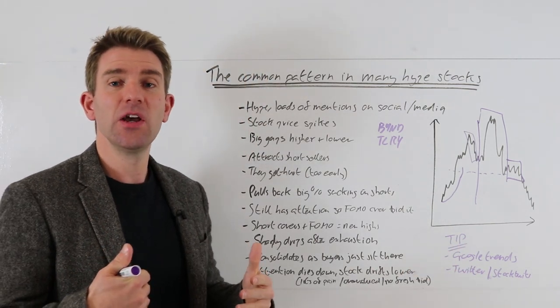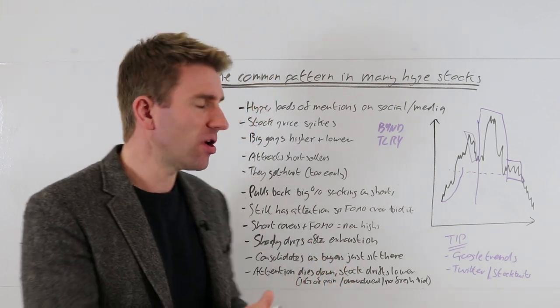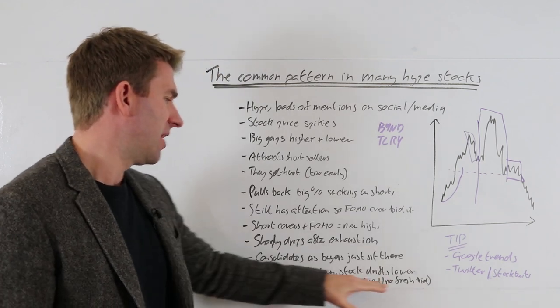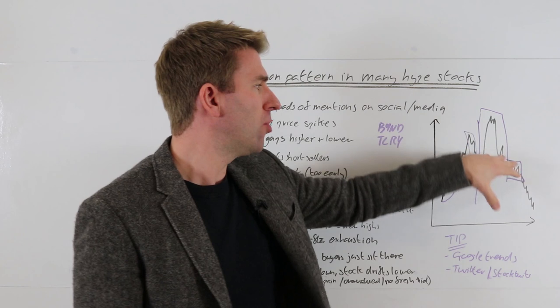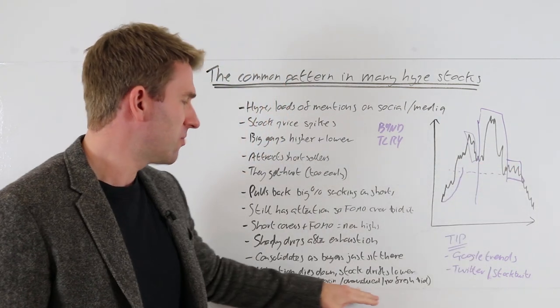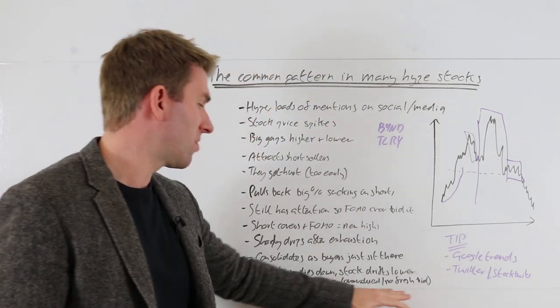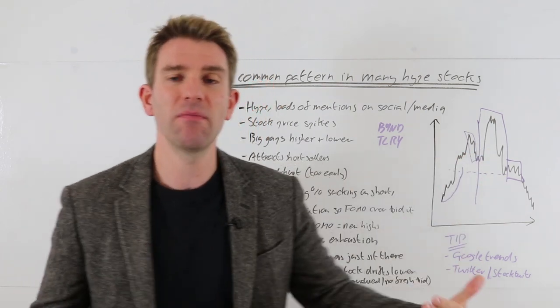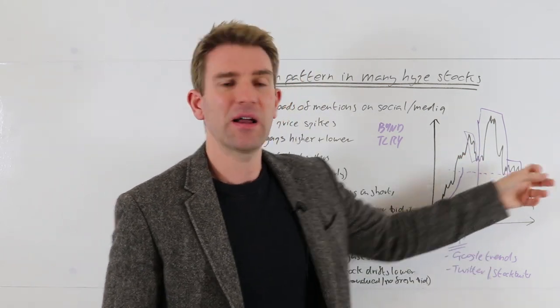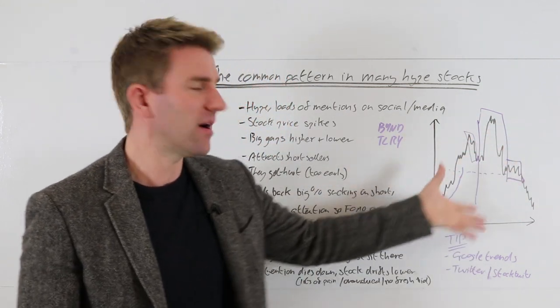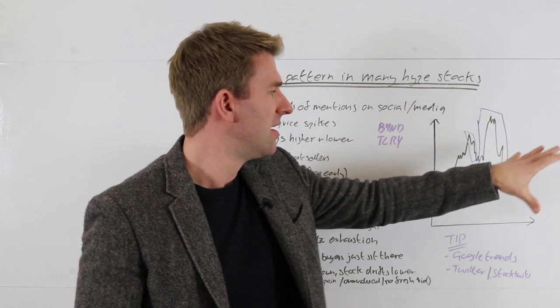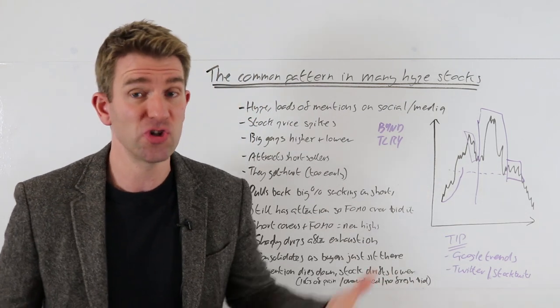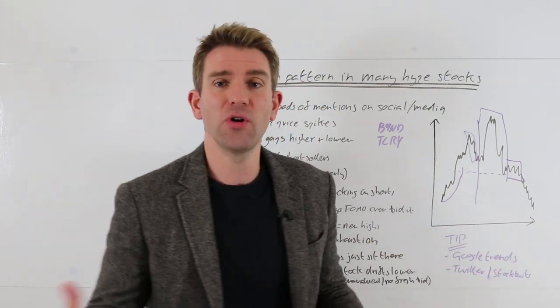Then it generally will start to just revert back to the mean. It will chug lower. You get that sharp drop of exhaustion, get the consolidation, and the attention dies down, and the stock drifts lower. That's really because a lot of people who have bought and sat with it have taken a lot of pain. You've also got the overvaluation pressure on it, and then you've also got the fresh shorts that are coming in. There's no real demand—everyone whose demand was there is done. Everyone who's got a longer-term thesis is still not buying here. The short-term guys who were looking for a quick runner have all been in and out, done and dusted.